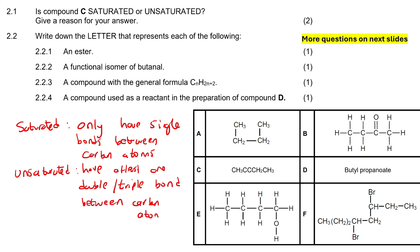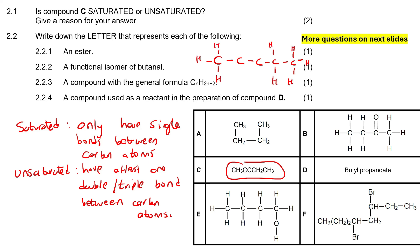If we look at compound C, we can see it has a CH3, then a C, then another C, then a CH2, and then a CH3. All of these lines represent hydrogens. The only way each carbon can satisfy four bonds is to make that a triple bond. So there is at least one triple bond between carbon atoms, meaning this is definitely unsaturated — because it is an alkyne, or because it has a triple bond between carbon atoms.